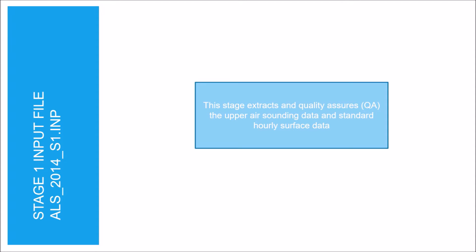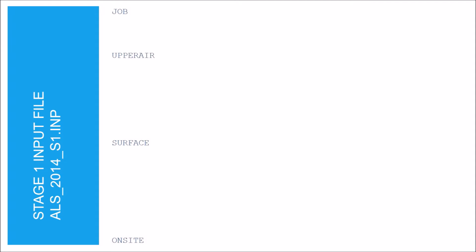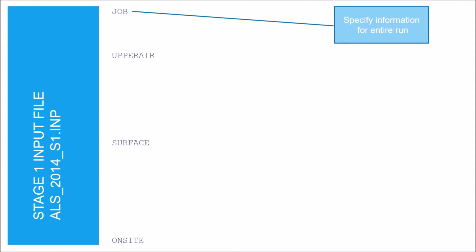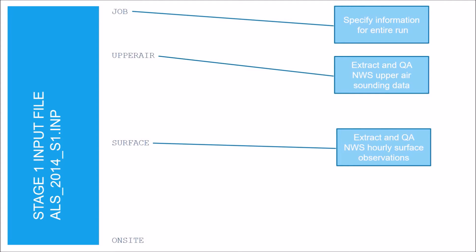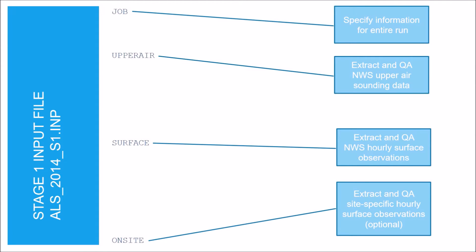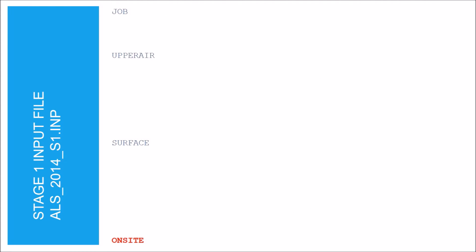The AirMet Stage 1 input file is named ALS_2014_S1.INP. This stage extracts and quality assures the upper air sounding data and standard hourly surface data. This input file is grouped into four sections: the job section, the upper air section, the surface section, and the on-site section. The on-site section is optional and is only needed if you have site-specific surface observations. We are not using site-specific data in our example, so this section can be omitted.